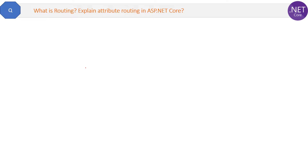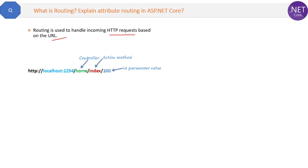Whether it is ASP.NET Core or MVC or any other web technology, the definition of routing is always the same. Routing is used to handle incoming HTTP requests based on the URL. For example, here is a URL and you can see how by default the URL will determine the action to be taken by the request. So in the URL itself, you can see home is the controller, index is the action method, and 100 is the ID parameter value. So by looking at the URL, you can tell how it will execute.